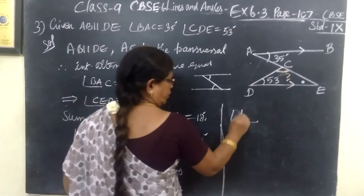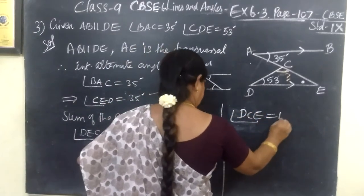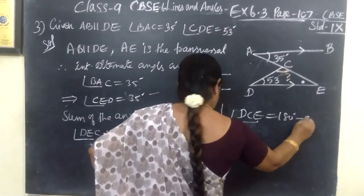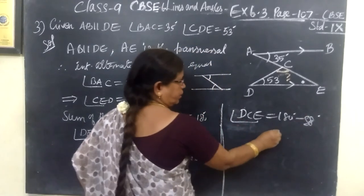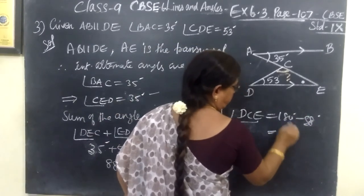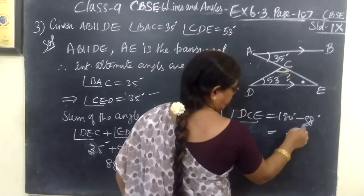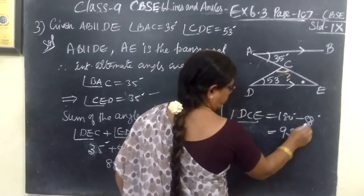Therefore, DCE equals 180 minus 88, which equals 92 degrees.